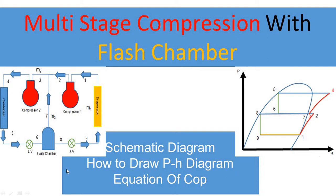Welcome to VATBase mechanical engineering. In this video I teach you multistage compression with flash chamber, which is used in vapor compression refrigeration systems. I will teach you the schematic diagram, how to draw the p-H diagram process by process, and how to find the equation of COP. Multistage means this system uses two compressors and one flash chamber.